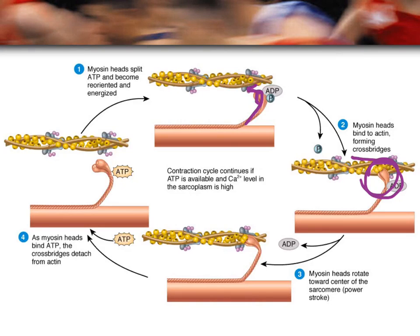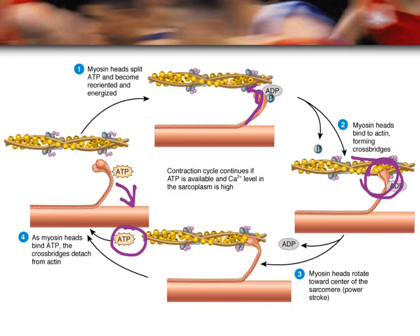Powered by ADP — the energy from the splitting of ATP — the myosin head pulls the actin filament toward the M-line. Then another ATP binds to the myosin head, energizing it, causing the myosin head to detach from the actin filament and pull back into set position. When that ATP splits again, it hooks onto the next area of the actin filament and pulls it again, continuously pulling the actin filament toward the M-line.